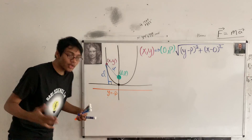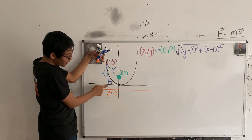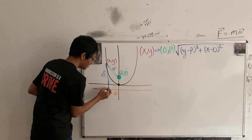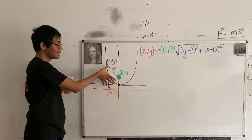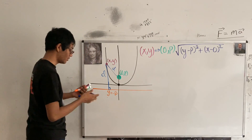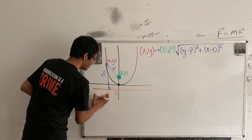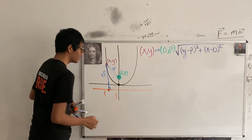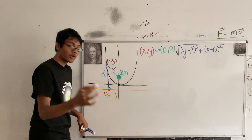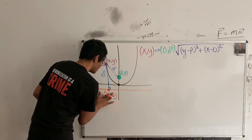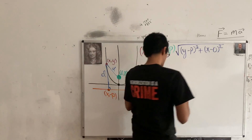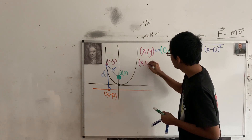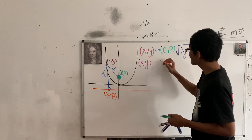This distance d equals the distance from the purple point to the orange directrix line as well. We put a point on the directrix directly below our purple point: it has the same x-coordinate, but its y-coordinate is negative p — so it's the point x comma negative p. The distance from x comma y to x comma negative p is our second distance expression.